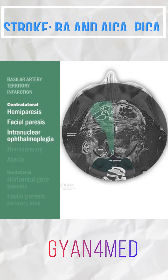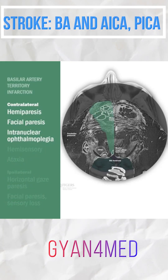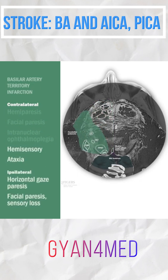Medial pontine strokes cause contralateral weakness and internuclear ophthalmoplegia. Lateral pontine strokes cause ipsilateral facial numbness and weakness, horizontal gaze paresis, and contralateral ataxia and hemisensory loss.